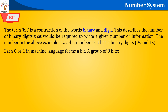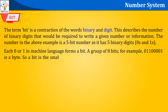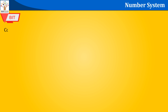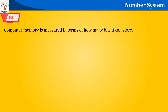The number in the above example is a 5-bit number, as it has 5 binary digits — 0s and 1s. Each 0 or 1 in machine language forms a bit. A group of 8 bits — for example, 01100001 — is a byte. A bit is the smallest unit of memory or instruction that can be given or stored on a computer.